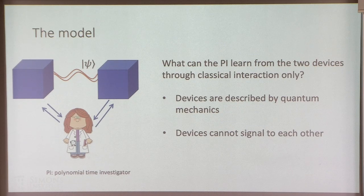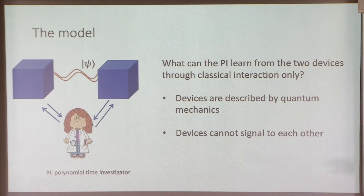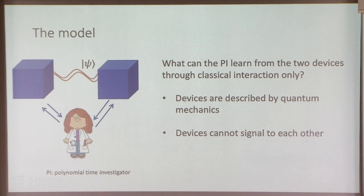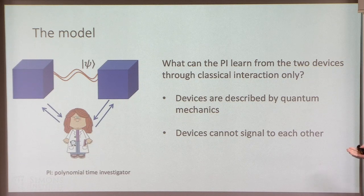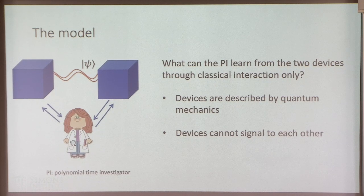Let's start with the model. What is a multi-prover protocol? The setup is this: there are two devices — think of them as black boxes. We know nothing about them; they're completely opaque. And the question is, what can the PI — which stands for polynomial time investigator — learn from these two devices through classical interaction only?